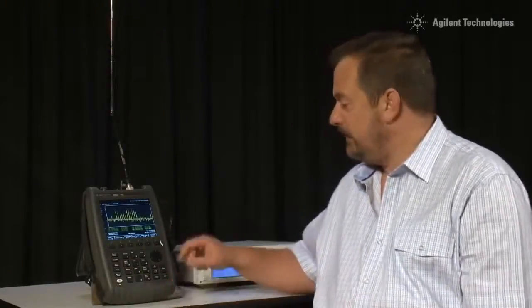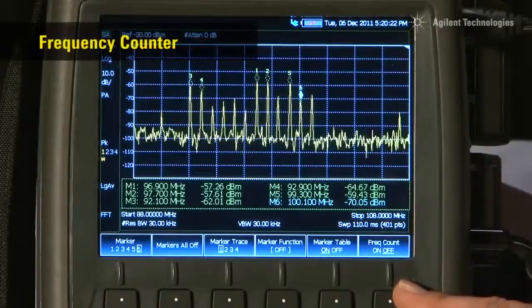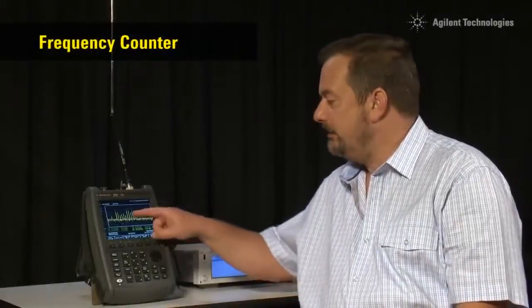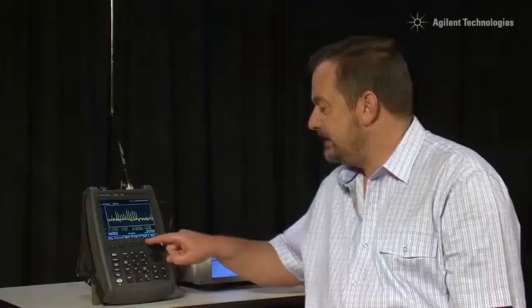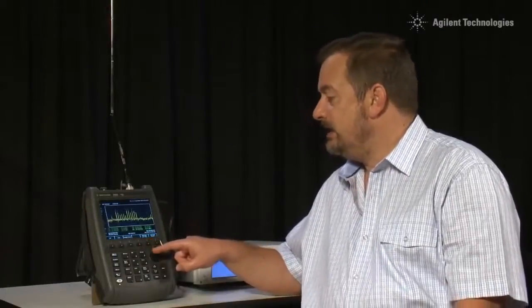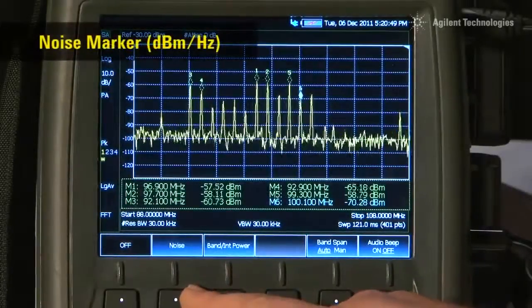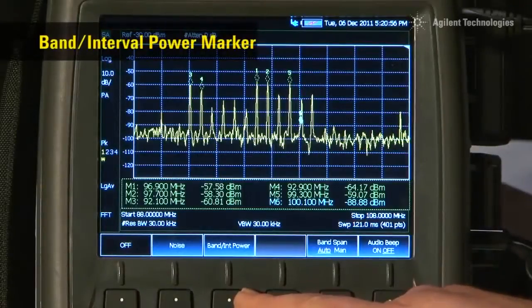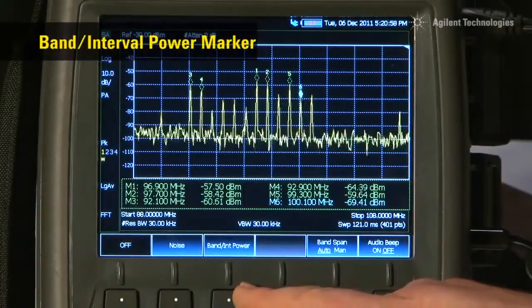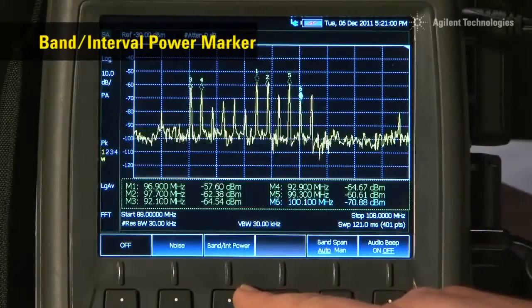And again, as with all Agilent Spectrum analyzers, it has a built-in frequency counter, so we can accurately measure the transmit frequency of any of these carriers with 1 Hz resolution. If I press the marker function button, we can also turn on the noise marker, where we can measure carrier to noise ratio, normalized to a 1 Hz bandwidth. And we even have the band or interval marker for measuring the modulation or band power of a given transmission.